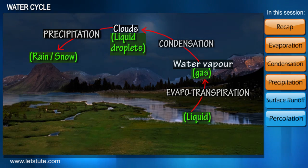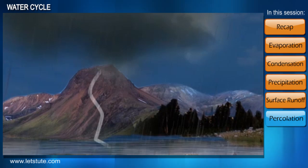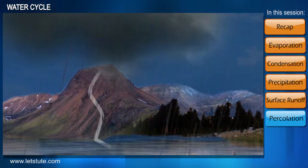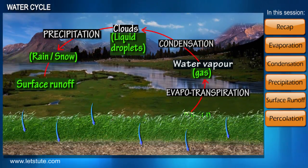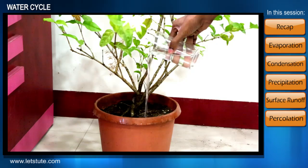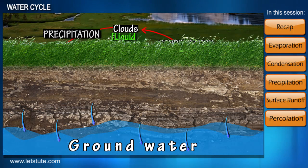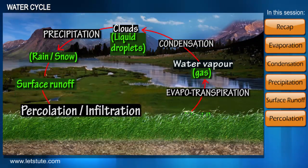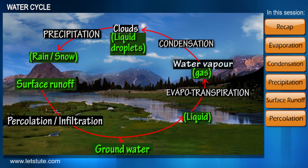On reaching the land surface, water is distributed in different parts. Water either flows off directly into rivers, oceans, or lakes — which are the surface water bodies — and this process is called surface runoff. Some amount of water seeps down or diffuses into the ground to give us groundwater. Have you seen how water immediately seeps down when we water the plants in a pot? Groundwater formation happens in a similar way, and this is called percolation or infiltration.